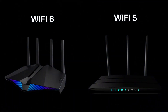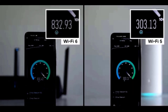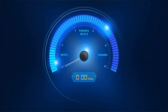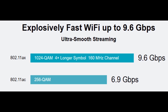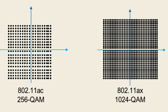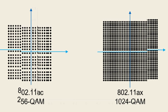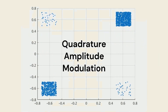Let's look at the advantages of Wi-Fi 6 over previous versions. Firstly, Wi-Fi 6 offers explosively fast Wi-Fi up to 9.6 gigabits per second, which provides ultra-smooth streaming, as compared to Wi-Fi 5 which offers up to 6 gigabits per second. This is because it uses 4 times longer symbol 160 MHz channels and 1024 QAM against 256 QAM — QAM being Quadrature Amplitude Modulation.